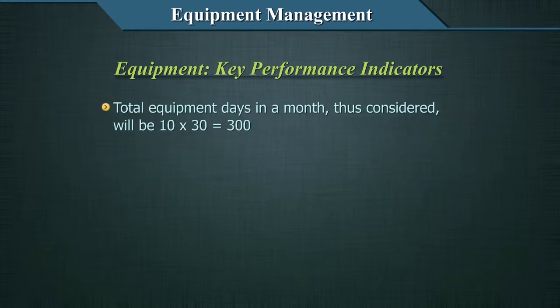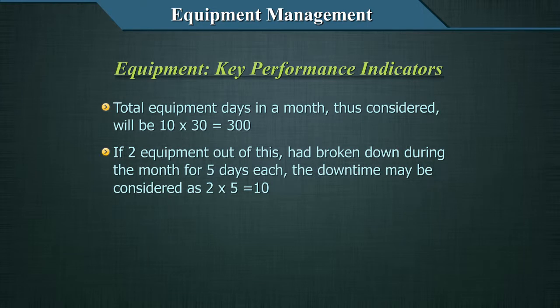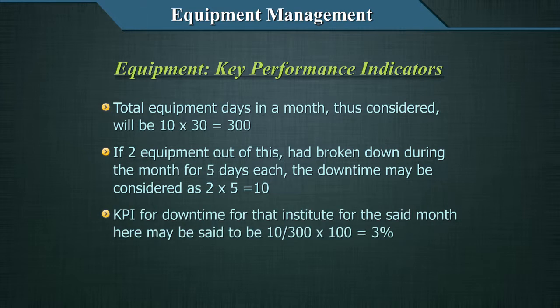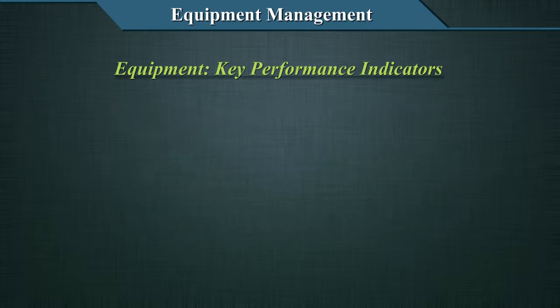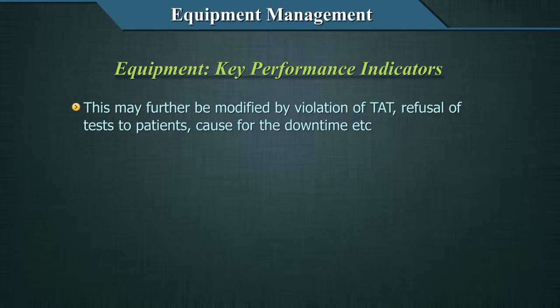The total equipment days in a month would be 10 × 30 = 300. If 2 pieces of equipment broke down during the month for 5 days each, the downtime would be 2 × 5 = 10. The KPI for downtime for that month would be (10 ÷ 300) × 100 = 3%. This may be further modified by violation of TAT, refusal of tests to patients, calls for the downtime, etc.